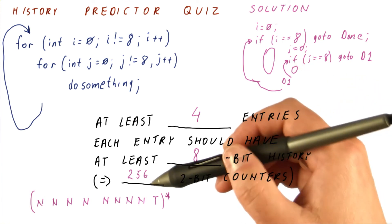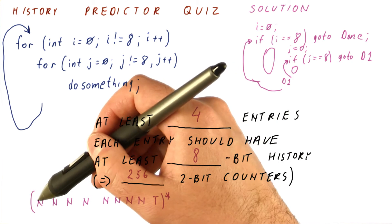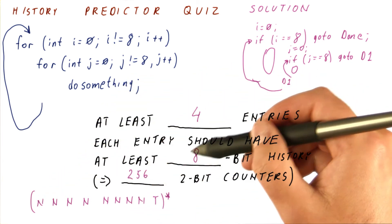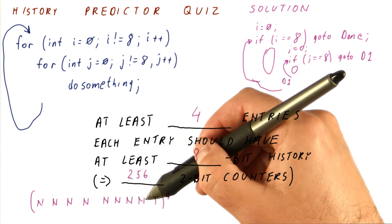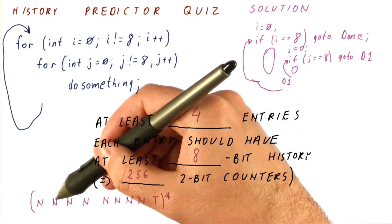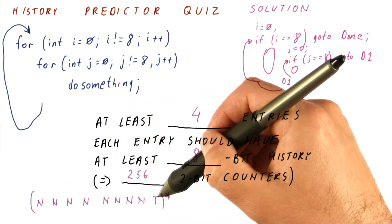So if you look at how many possible patterns we actually have of length eight, we have a pattern of eight not takens, we have a pattern of seven not takens followed by a taken.